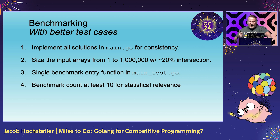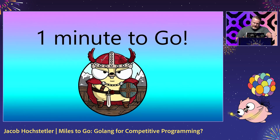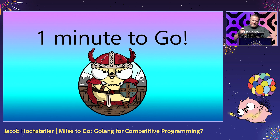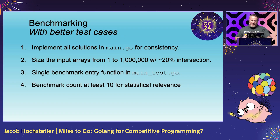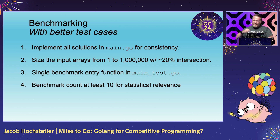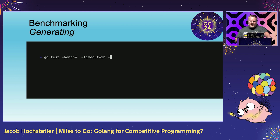Our first step is writing better test cases. We're going to implement all solutions in main.go for consistency, size the input arrays from one to one million with a 20% intersection, have a single benchmark function in main_test.go so we can compare, and run at least 10 counts for relevance.